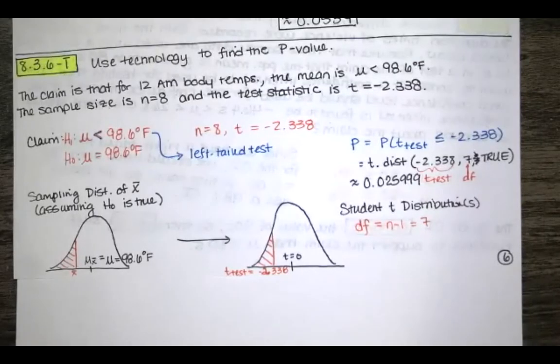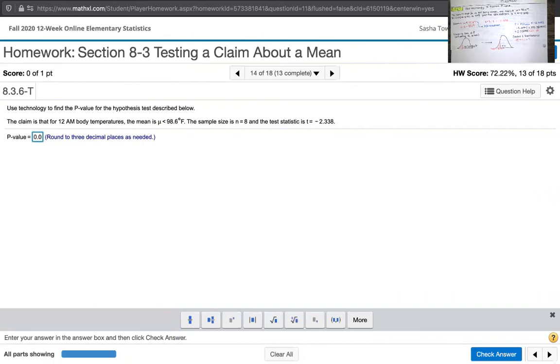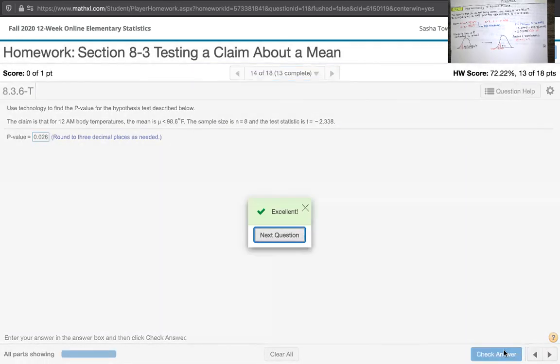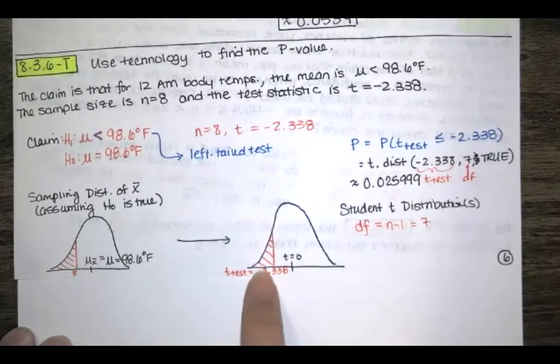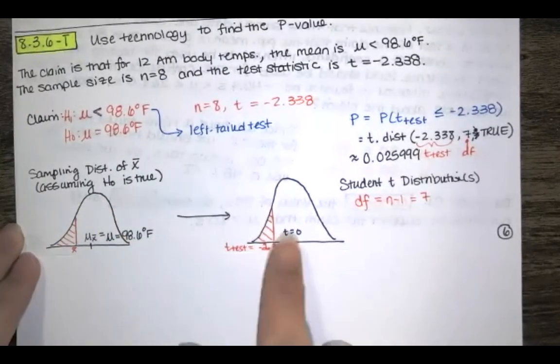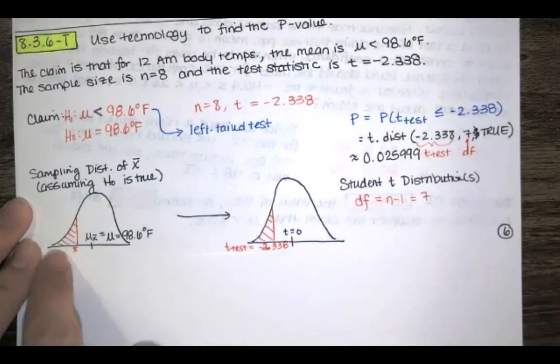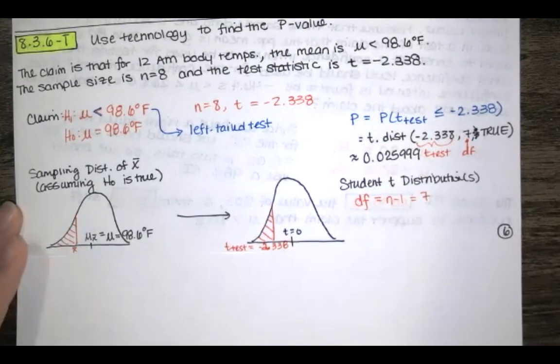And actually, I don't know here how many decimal places they want us to round to. They want us to round to three decimal places. So if I round to three decimal places, this is going to be 0.025, and there's a 9 after that. So we're going to round to 0.026. That's our p-value. And again, the p-value is the probability that we get a test statistic as extreme as ours or more extreme than ours. And that corresponds to the probability that we get an x-bar value, a sample mean, as extreme as ours or more extreme than ours, given that the null hypothesis is true.